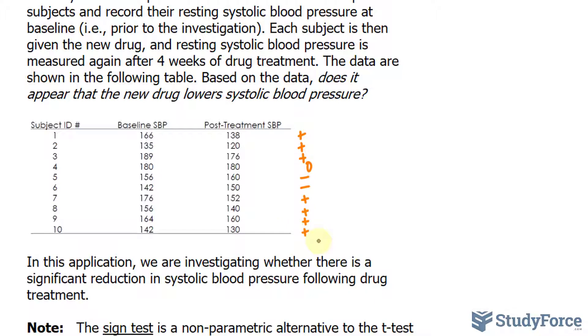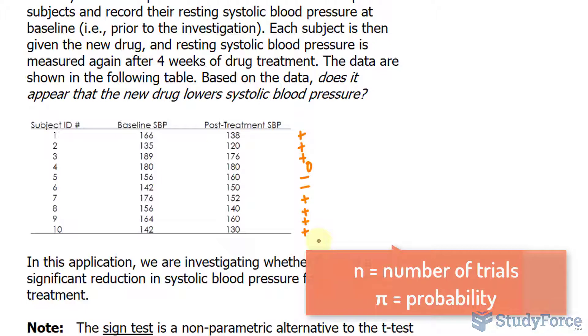The sign test is based on the binomial distribution. Remember, the question asks, does the new drug lower systolic blood pressure? If so, our differences would be positive. There are a total of 10 different scores, with 7 out of those 10 having a plus sign. Since we expect to see 5 plus signs and 5 negative signs, we have a binomial distribution with an n value of 10 and a π value of 0.5, 50% chance being positive and 50% chance being negative.